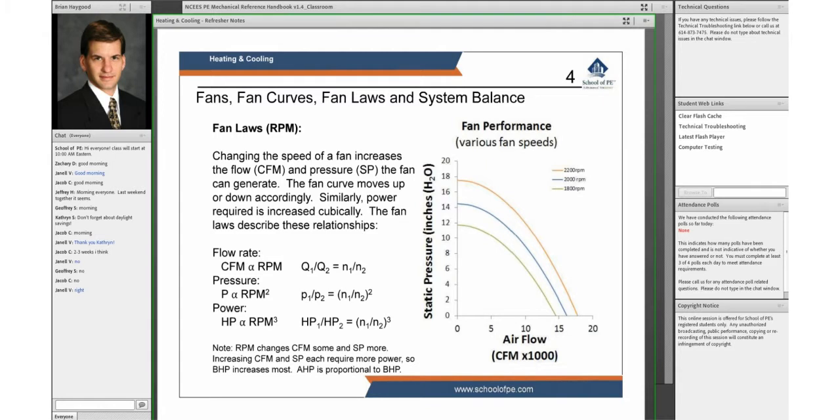The fan performance curve moves up and down as we change speed. Drawn here I've got our original 2,000 RPM curve plus a 2,200 RPM fan curve and an 1,800 RPM fan curve. These would typically appear on successive pages of a book related to this fan, this make and model of fan.